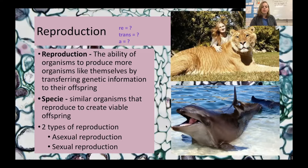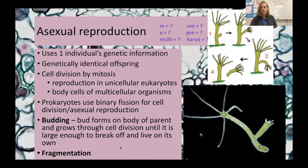We have two types of reproduction. Asexual reproduction uses one parent, so you only have one individual's genetic information being passed on. This means all of the offspring are going to be genetically identical to each other and to the parent.